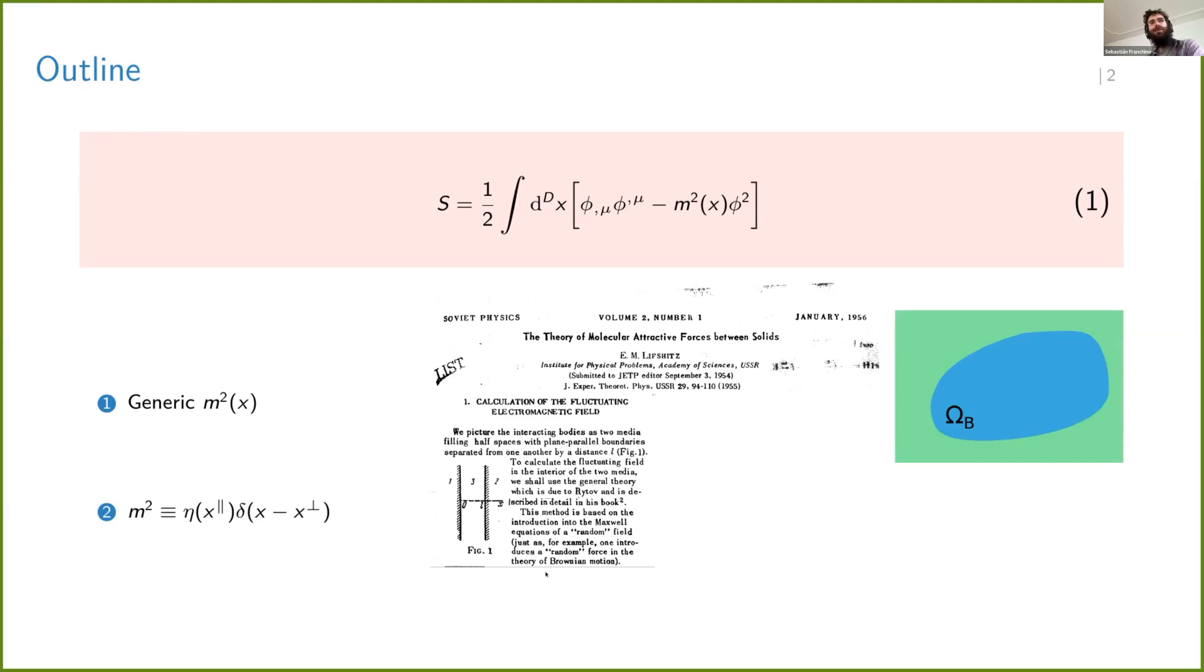In the case of Lifshitz, the situation is more subtle because he considers not a perfectly conducting plate, but instead they are dielectric media. So region one and region two have some permittivity and therefore you should do an analog of what I will be doing here, which is considering some m that depends on x.